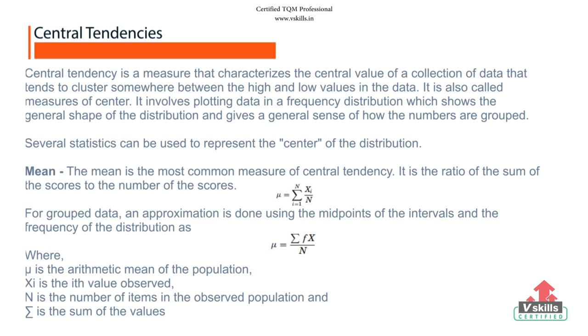It is the ratio of the sum of the scores to the number of the scores. For a grouped data, an approximation is done using the midpoints of the intervals and the frequency of the distribution, as shown in the formula. In the two formulas above, mu is the arithmetic mean of the population, xi is the ith value observed, n is the number of items in the observed population, and sigma is the sum of the values.